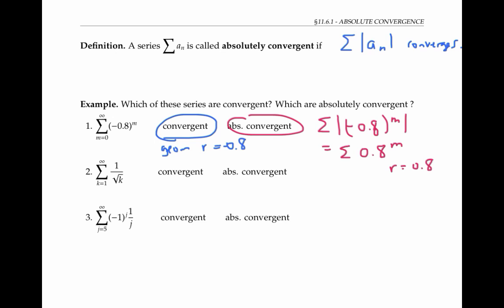The second series, the sum of one over the square root of k, is not convergent. We can see this by the p-test, since p is equal to one half, which is less than one. It's also not absolutely convergent. In this case, the sum of the absolute values of the terms is just the same as the sum of the original terms, which we already said diverges.